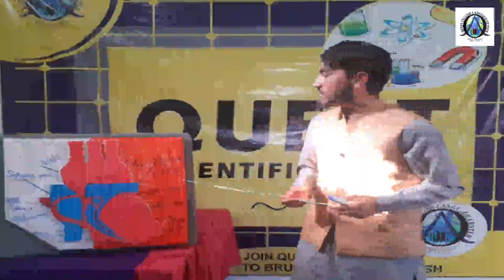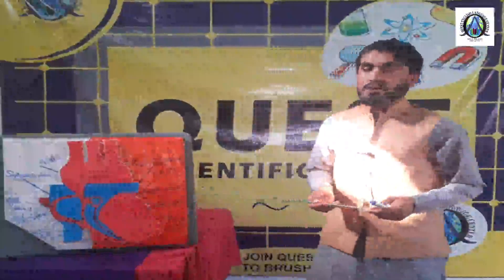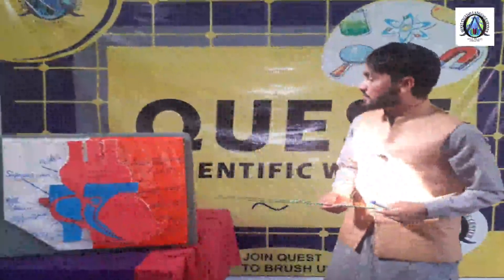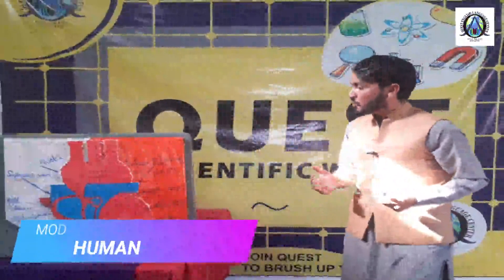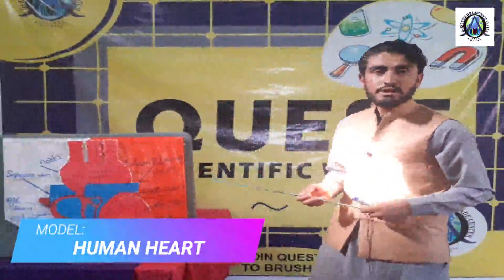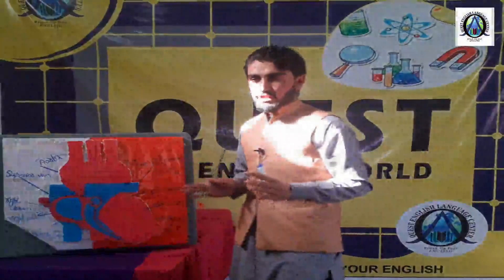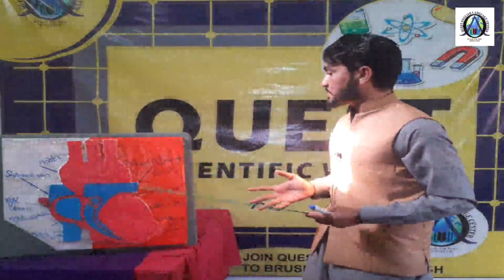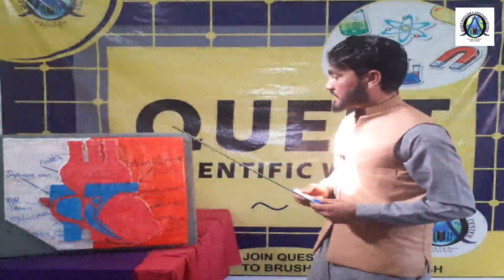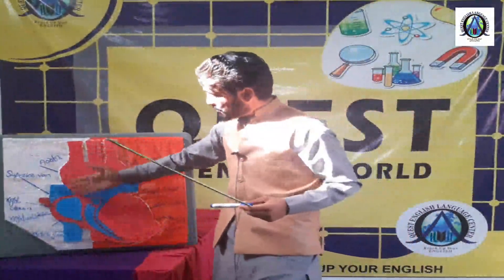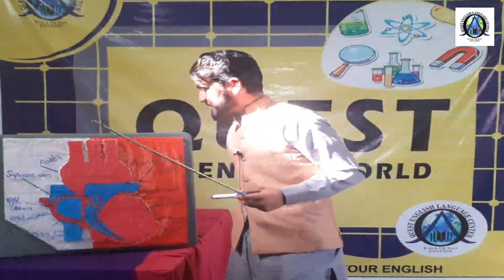I took part in the Quest Scientific World and I want to define the human heart. The human heart has four chambers — like four parts. It is divided into four parts: right atrium, left atrium, right ventricle, and left ventricle.